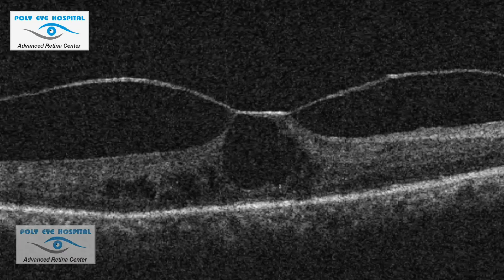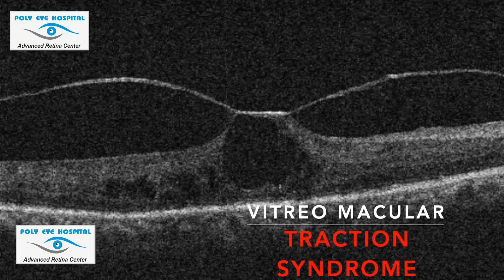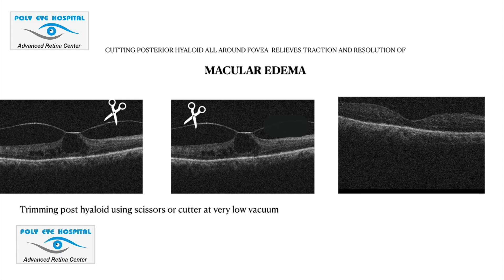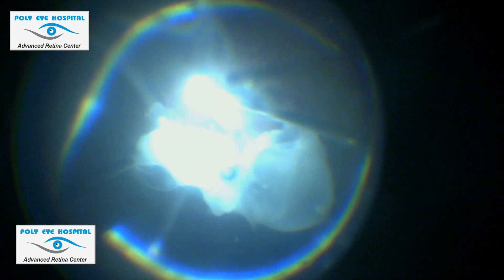Coming to the last case — vitreomacular traction syndrome. Special care must be given while pulling the vitreous temporally, as it can lead to lamellar hole formation. The plan is to cut the hyaloid all around the fovea rather than peeling the vitreous across it. Always stain the vitreous with triamcinolone in these cases. Start PVD induction nasally and slowly form the V-string, then cut the vitreous all around the fovea to release all traction.